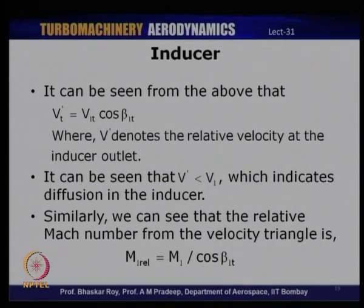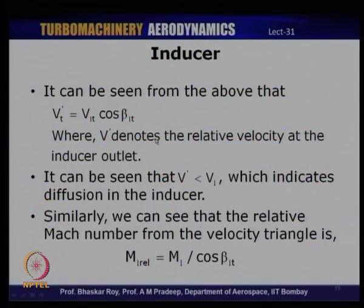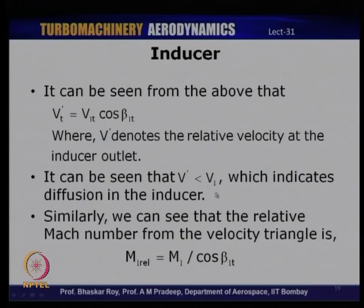From the velocity triangles, the relative velocity leaving the inducer at the tip, V'_t, is related to the inlet relative velocity through the blade angle: V'_t = V₁t · cos(β₁t). Since cos(β₁t) is less than 1, V'_t is always less than V₁, meaning there is a certain amount of diffusion taking place even within the inducer. Similarly, the Mach number is related to the inlet Mach number through the blade angle β₁.